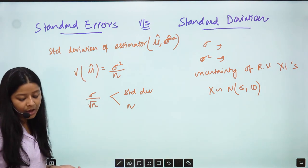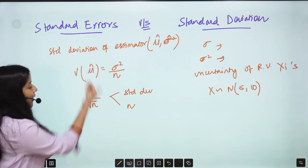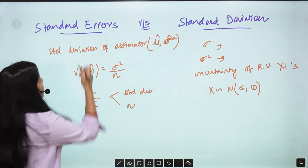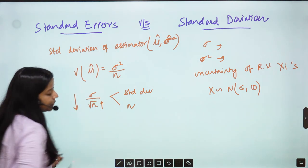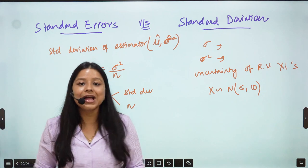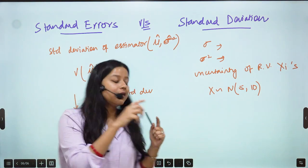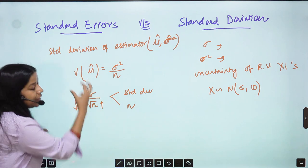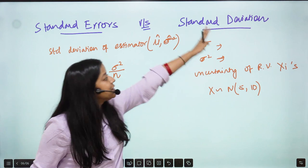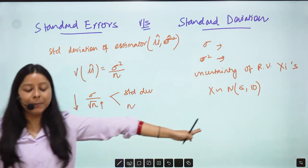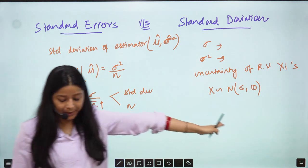Standard Error will decrease if n increases. This entire thing will decrease if your sample size increases and we just showed that. As your sample size increases, this part decreases, whereas this Standard Deviation does not depend on the sample size.